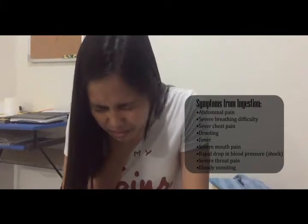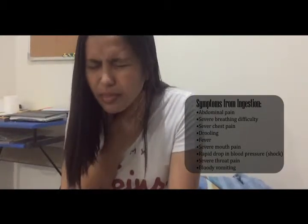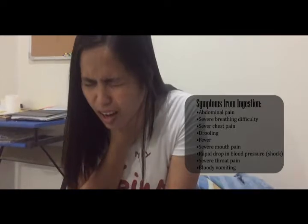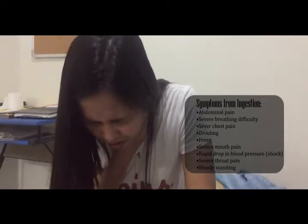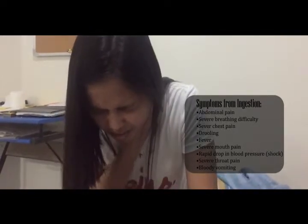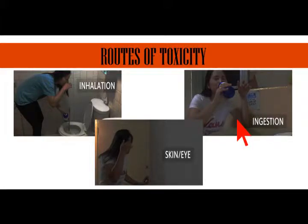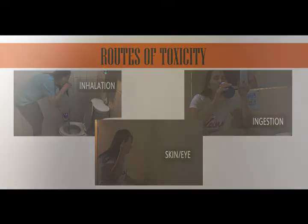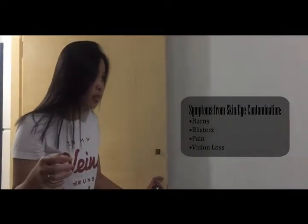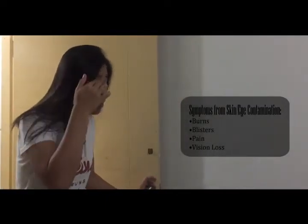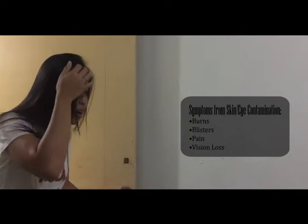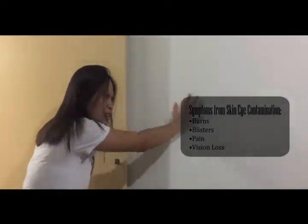Ingestion may also cause a rapid drop in blood pressure, severe throat pain, and bloody vomiting. If muriatic acid touches the skin or eyes, it may cause severe chemical burns, blisters, pain, and vision loss.